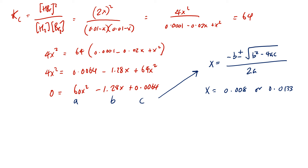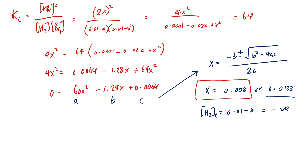Looking at the ICE table, the equilibrium concentration of H2 equals 0.01 minus x. Using x equal to 0.0133 would give a negative value, which is chemically meaningless. So the valid solution is x equal to 0.008. The equilibrium concentrations of H2 and Br2 are both 0.01 minus 0.008 equals 0.002 molar. The equilibrium concentration of HBr is 2x equals 0.016 molar.